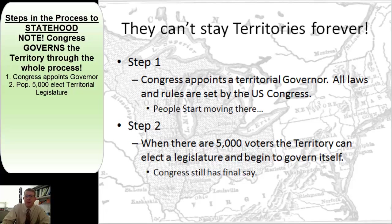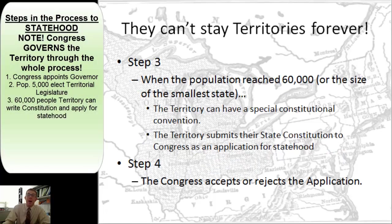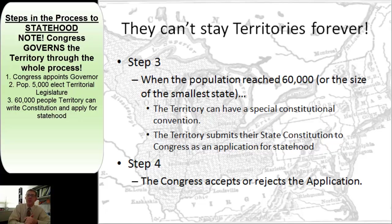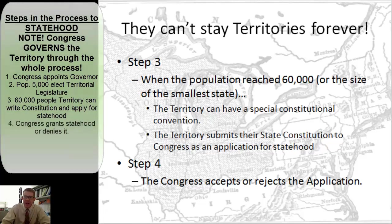Congress still has that final say. The third step is when the population reaches 60,000 — or the population of the smallest existing state — the territory can hold a special constitutional convention. At that convention, they will write a constitution and apply to Congress to become a state. The state constitution they write is their application. Congress gets it and has the final say — they either accept it or reject it.